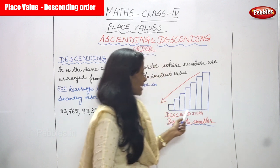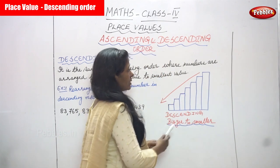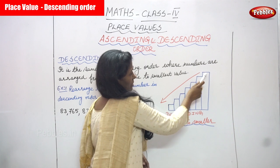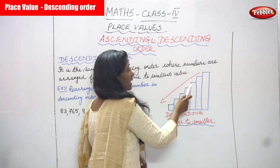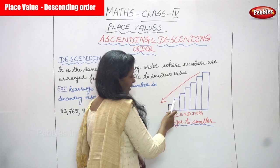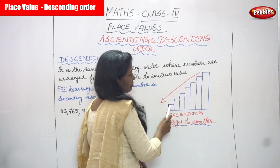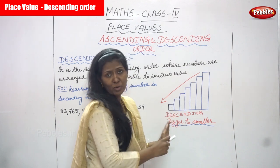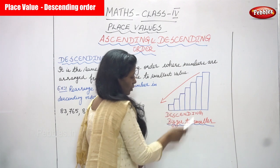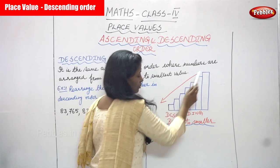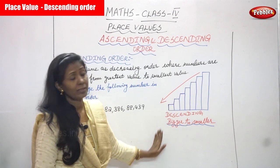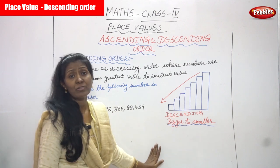This is the diagram of descending order. See — the first bigger number, second bigger number, third, fourth, fifth bigger number, and finally the smallest number. We end with the smallest number. Start with a bigger number and end with the smallest number — that is called descending order.